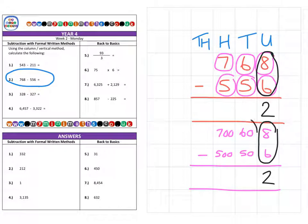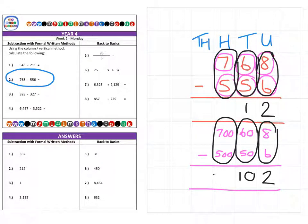There's 60 minus 50, which gives us a 10, and we place that single 10 underneath the tens column. Then finally in the hundreds column, we have 700 minus 500 to give us 200, for a final answer of 212.